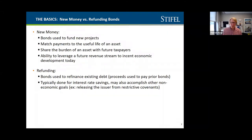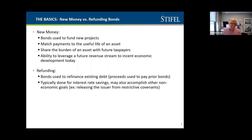You have what's known as new money, which is pretty self-explanatory — used to fund new projects. You match the payments to the useful life of the asset, so if you want to borrow for computers that have a life of maybe five years, it wouldn't make sense to do a 30-year financing for that. Borrowing basically spreads the burden of an asset over the life of the asset and the tax base over time, allowing you to pull revenue forward and do a project today.